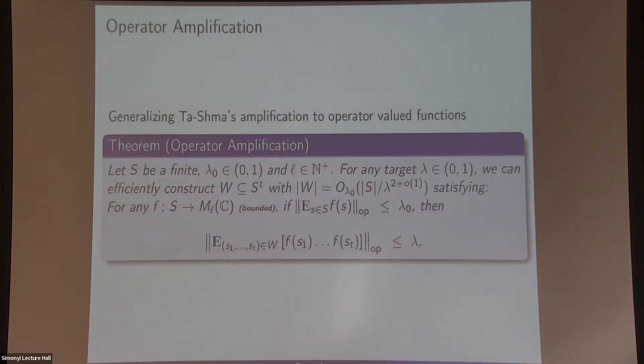What is the technique behind this? It's a form of operator amplification. So Thathachar had some construction that applies to scalar-valued functions. Here you are going to have matrix-valued functions. You're given a finite set, a parameter lambda naught, a dimension parameter, and for any target lambda we can explicitly construct a single collection S that is going to have about the correct size, such that for any matrix-valued function, those are l by l matrices, if the average of the operator norm of this function is at most lambda naught, you're going to have a function on this collection of tuples. You're going to look at each tuple, you're going to multiply, and like this you're going to compute the operator norm. It's going to be at most lambda, and lambda is much smaller. This is the main technical component that's going on there.